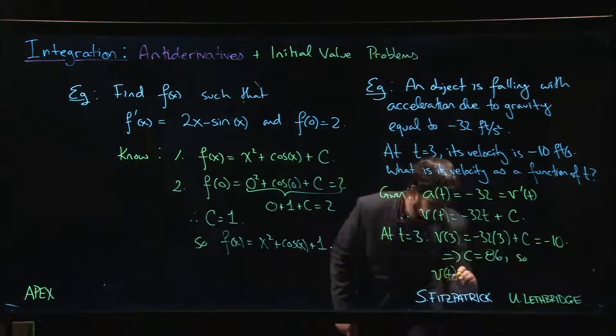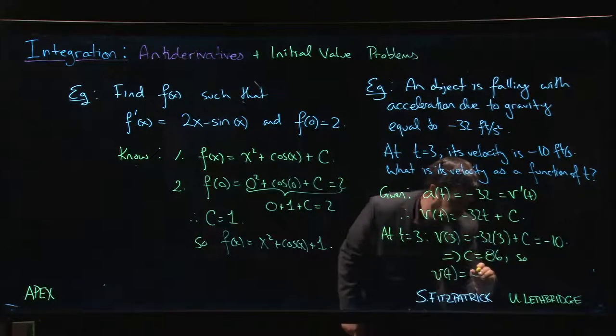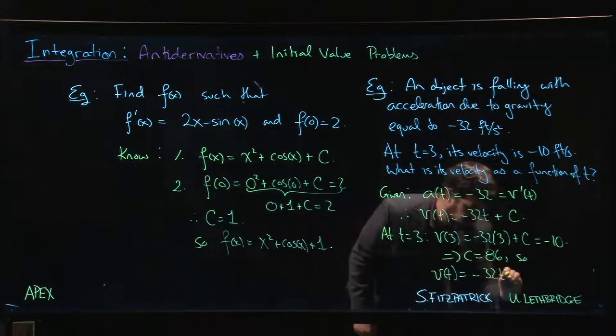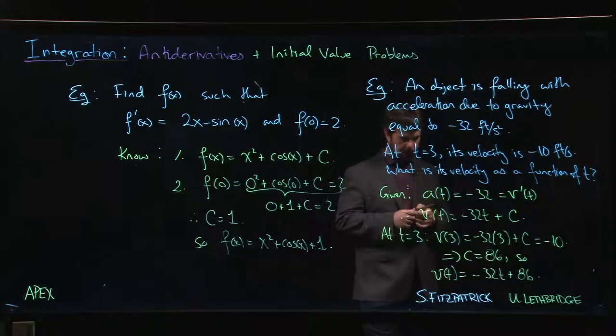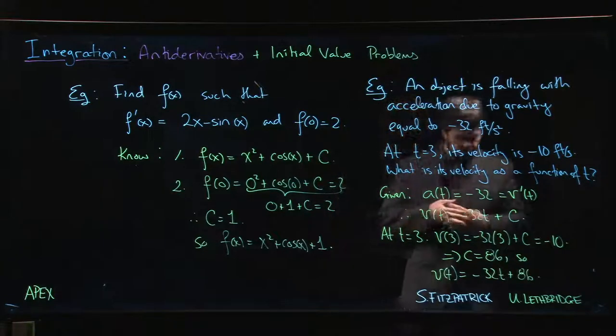So my velocity as a function of time is minus 32t plus 86.